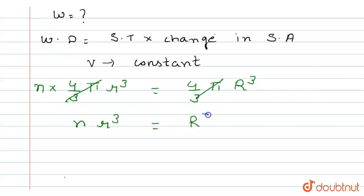From here we can find the value of n. N equals 5 by 2 raised to power 3, which equals 15.625. Now n is approximately equals to 16. So 16 number of soap bubbles should combine to form a big bubble.